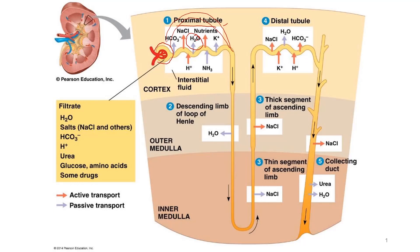The salt and water then diffuse from the interstitial fluid into the peritubular capillaries. Glucose, amino acids, potassium ions, and other essential substances are also actively or passively transported from the filtrate to the interstitial fluid and then into the peritubular capillaries. Processing of the filtrate in the proximal tubule helps maintain a relatively constant pH in body fluids.